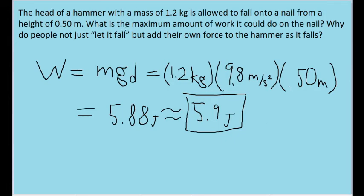The problem statement also brings up a conceptual question about why people, when using tools like hammers, don't just let their tools fall, and why we add our own force to the hammer as it falls. The reason is because if you add your own force to the hammer, you are accelerating the hammer further and adding more kinetic energy to it. This means that the hammer has a greater capability to do more work to the nail, since 5.8 Joules on its own is not very much.